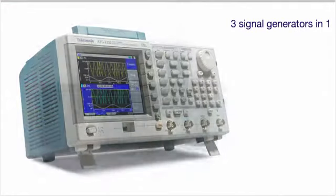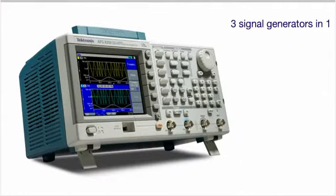Now you can replace a pulse generator, function generator, and arbitrary signal generator with one AFG-3000. You get three generators in one.